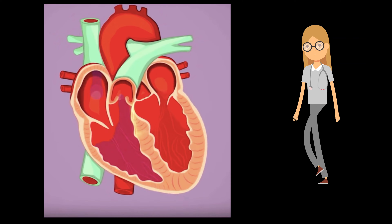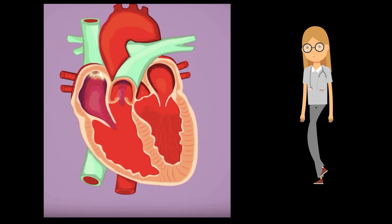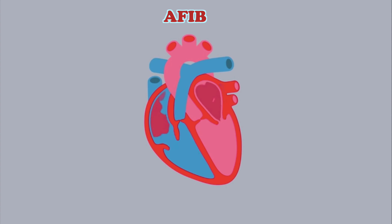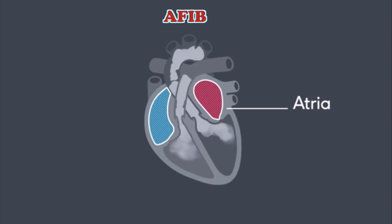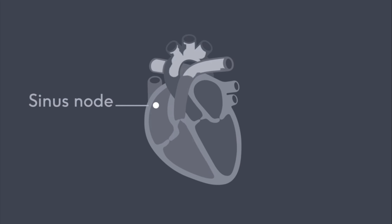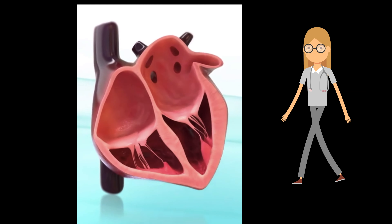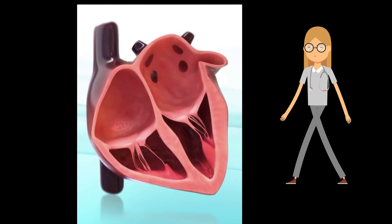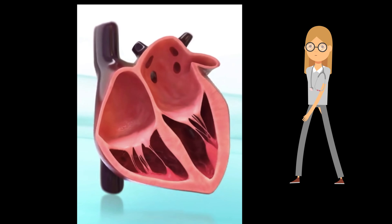Atrial fibrillation, also known as AFib, is the most common irregular heart rhythm that starts in the atria. Instead of the SA node directing the electrical rhythm, many different impulses rapidly fire at once, causing a very fast, chaotic rhythm in the atria.